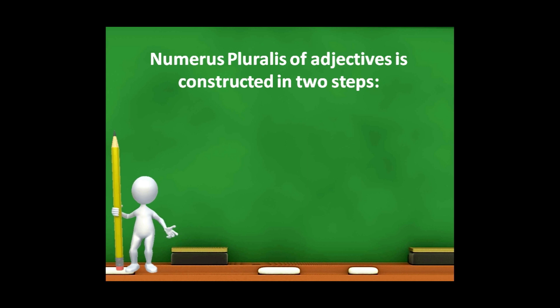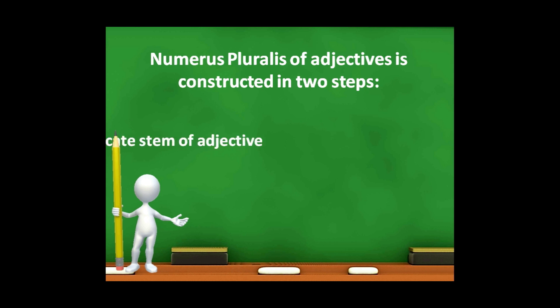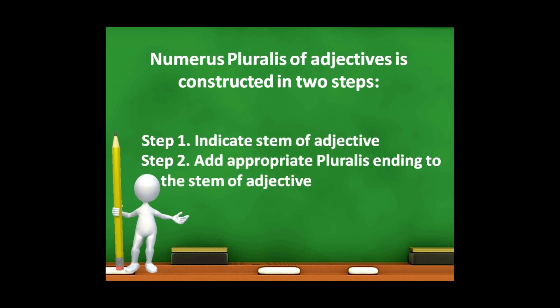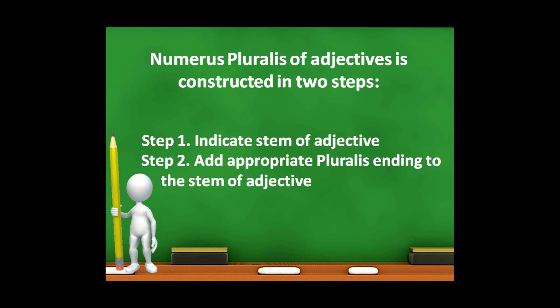Numerus pluralis of adjectives is constructed in two steps. The first step is to indicate the stem of the adjective. The second step is to add the appropriate pluralis ending to the stem of the adjective.